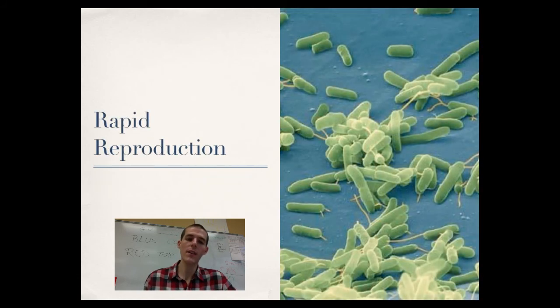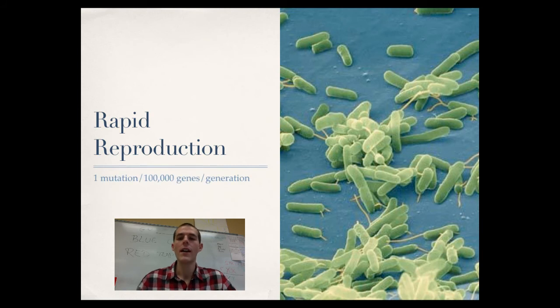Next up on the list is rapid reproduction. Now, note that there's a roughly general rate of mutation. Scientists have been able to calculate that roughly one mutation happens per 100,000 genes per generation. All right, so that's not a lot at all. 100,000 genes, one mutation in one generation, that's the general rate of mutation for most living organisms.